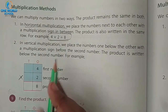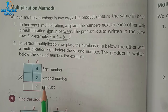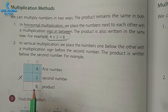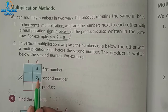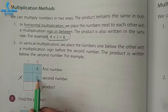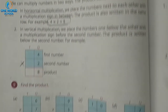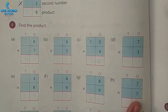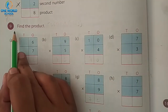Horizontal multiplication or vertical multiplication. In multiplication also, we have to start from the ones place. So, exercise number nine: find the product.